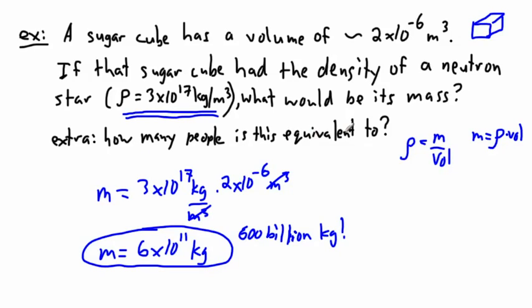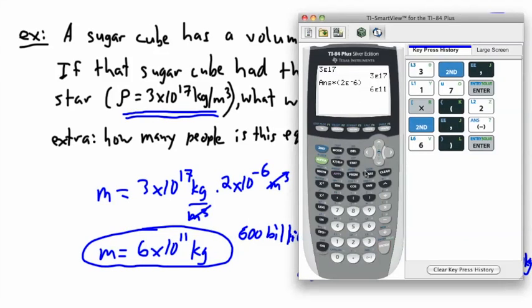How many people is this equivalent to? We can calculate that as well. Let's assume a person has a mass - it depends on what you assume the mass of a person is, but let's say around 70 kilograms. If we assume that, then we take our number of 6 times 10 to the 11 and divide it by 70.